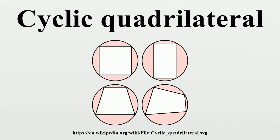Specifically, for sides A, B, C, and D, side A could be opposite any of side B, side C, or side D. An angle B between sides A and B can be expressed in terms of the sides, where theta is either angle between the diagonals. Provided A is not a right angle, the area can also be expressed as another formula where R is the radius of the circumcircle. As a direct consequence, there is equality if and only if the quadrilateral is a square.